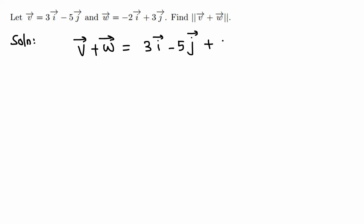So w is negative 2i plus 3j. We can combine like terms: 3i minus 2i is just 1i or just i, and minus 5j plus 3j is negative 2j.